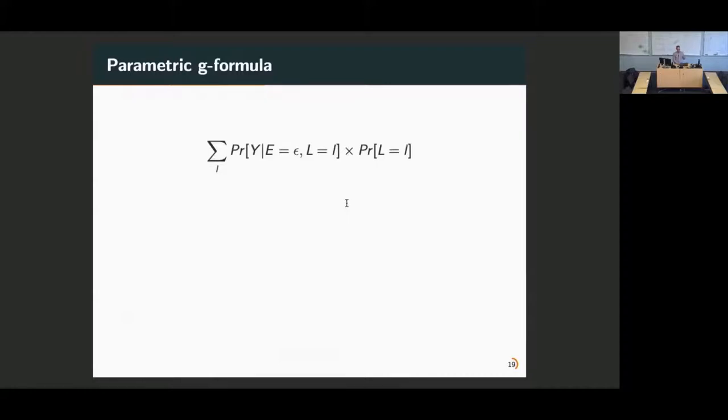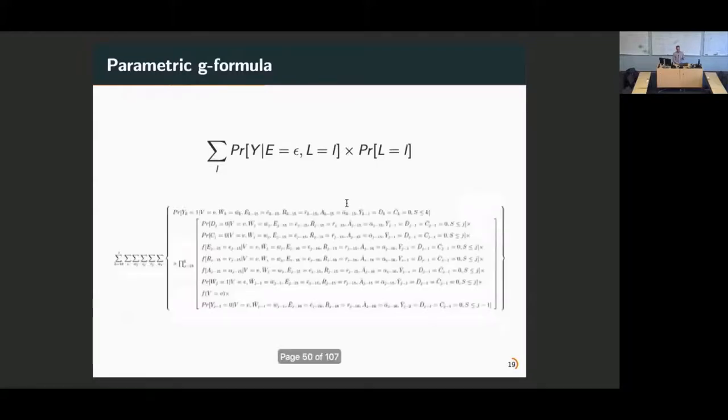This quantity is actually quite complicated. That's the simple example with one confounder, exposure, and outcome. What we estimated in this particular example is this. The more confounders you have, the more time points you have, it gets more and more complicated. I just wanted to show that it can become more complicated.